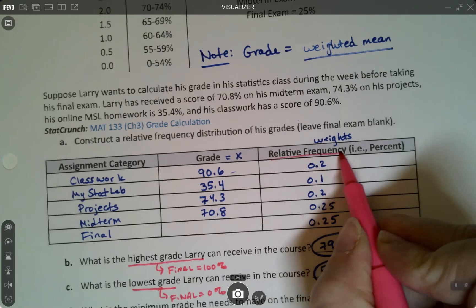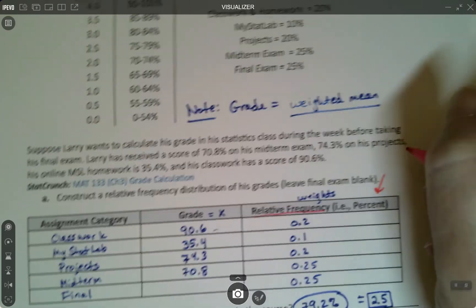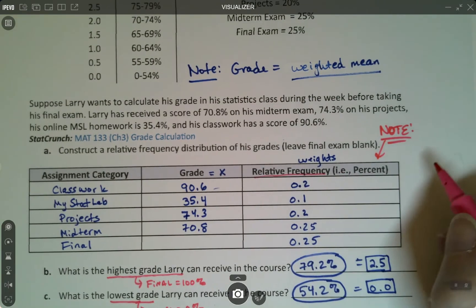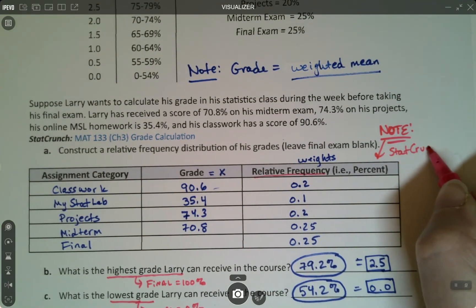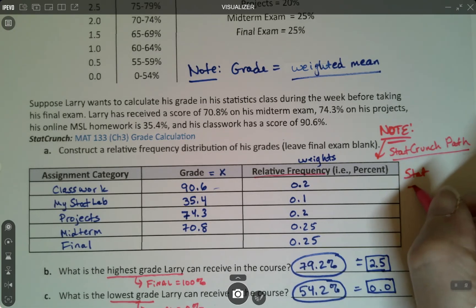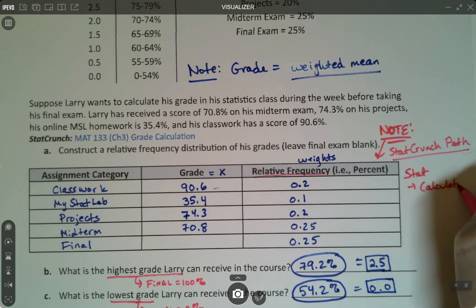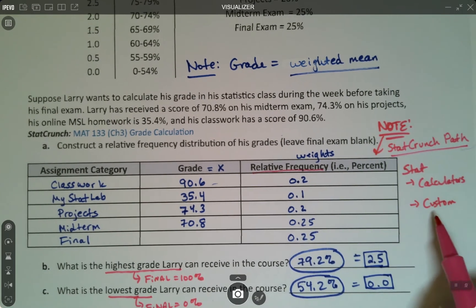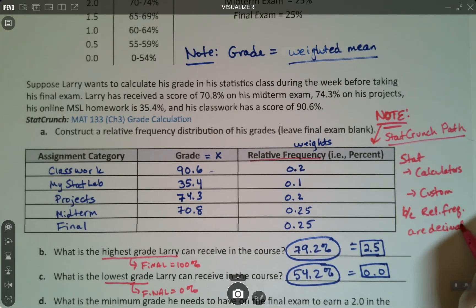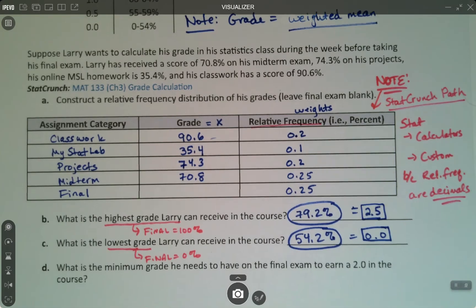Let's write a little stat crunch note. When working with relative frequency, let's make a note. The stat crunch path is stat calculators custom. This one's going to come back to haunt you. We will see this again. This will come back in Chapter 6. Because the relative frequencies are decimals, that's the path we have to use. So you want to make a note to yourself about it.